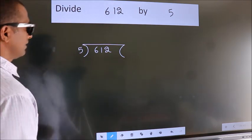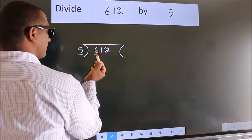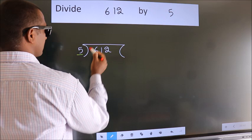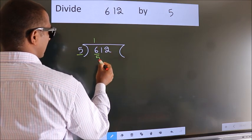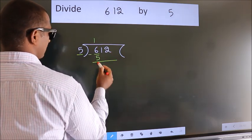Next. Here we have 6, here 5. A number close to 6 in the 5 table is 5 once 5. Now, we should subtract. We get 1.